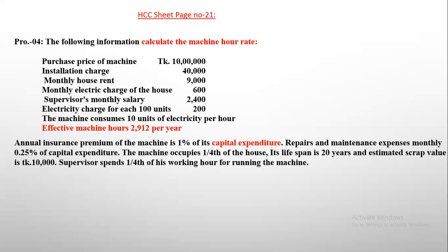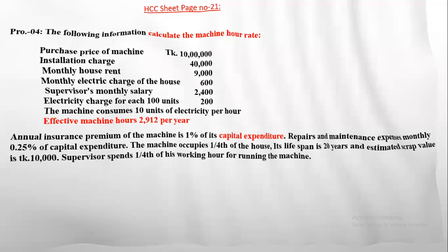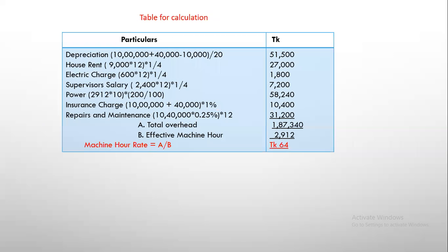First of all, I will tell you about this. How much house rent will be $19,000 to $1,000? You'll get $1,000 and $4,000. So how much house rent will be $19,000 to $12,000? One by four.